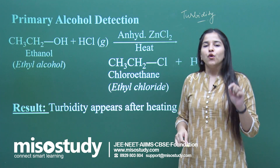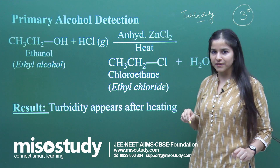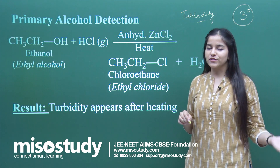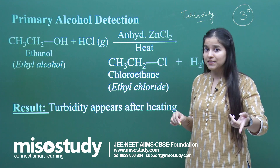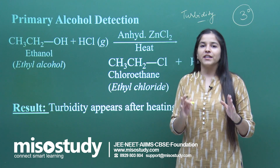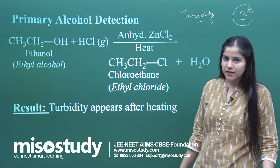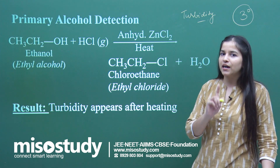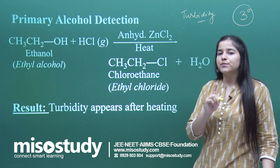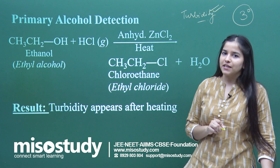Now, which carbocation is the most stable? We know that tertiary is the most stable. So definitely, tertiary being the most stable, it will be formed very quickly in the process. Once it is formed — since it is the intermediate in the reaction — it will lead to product formation very quickly, in fact more quickly than any other alcohol. So alcohols involving tertiary carbons form tertiary carbocations, and finally a quick product is obtained.